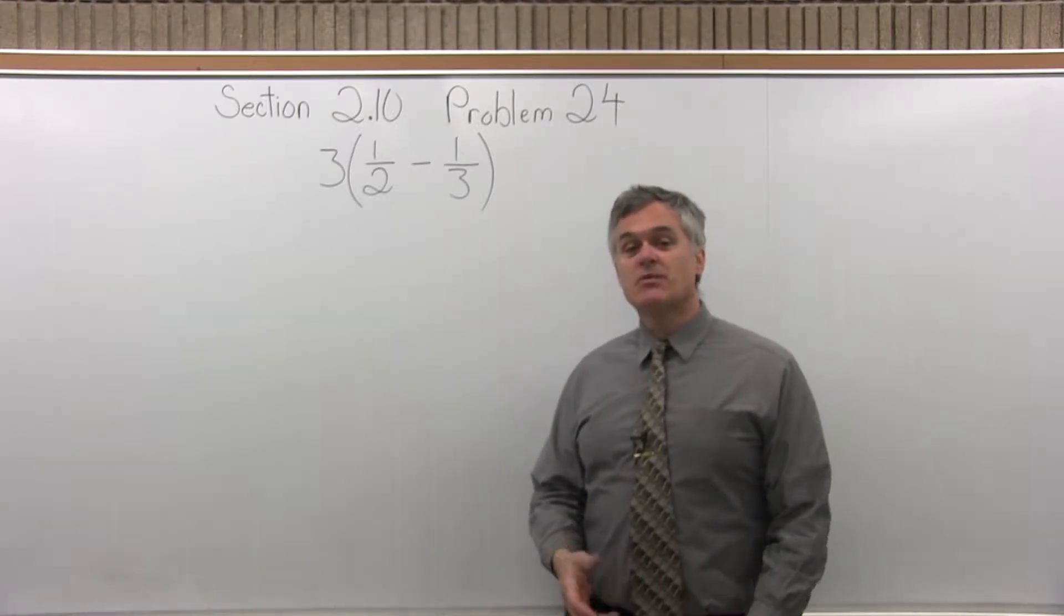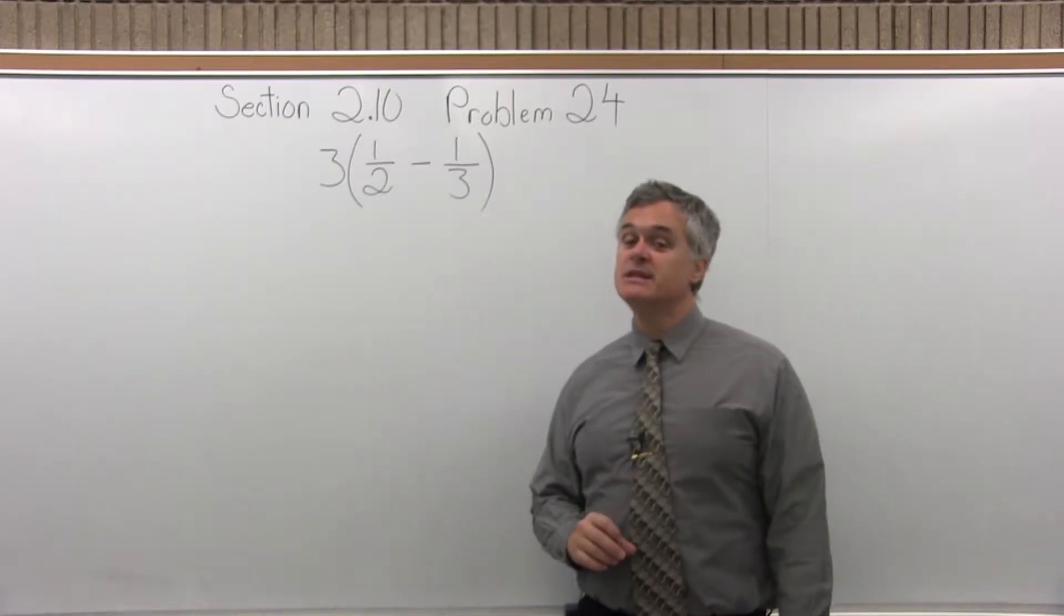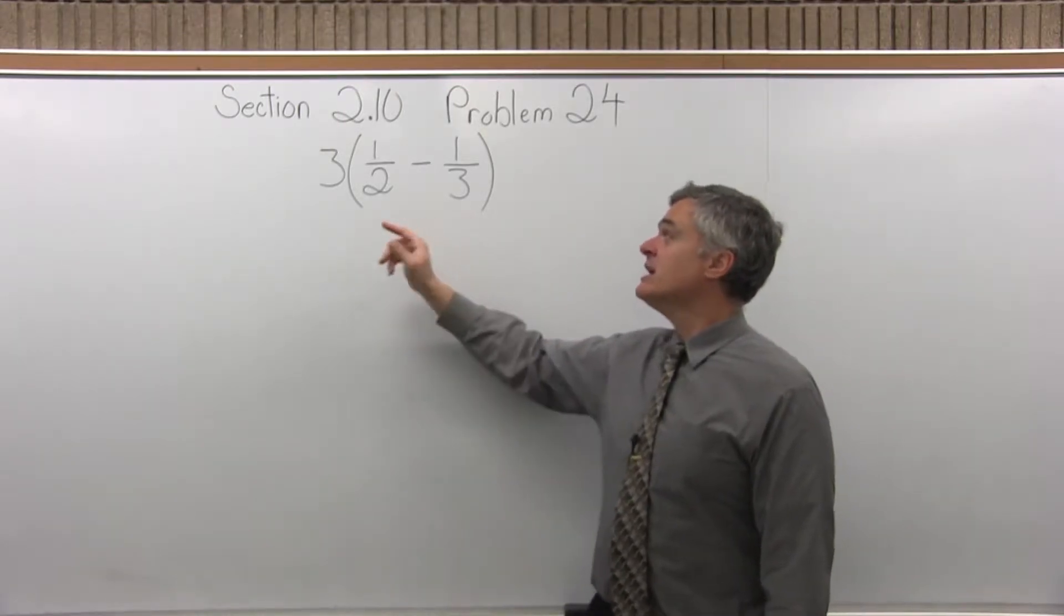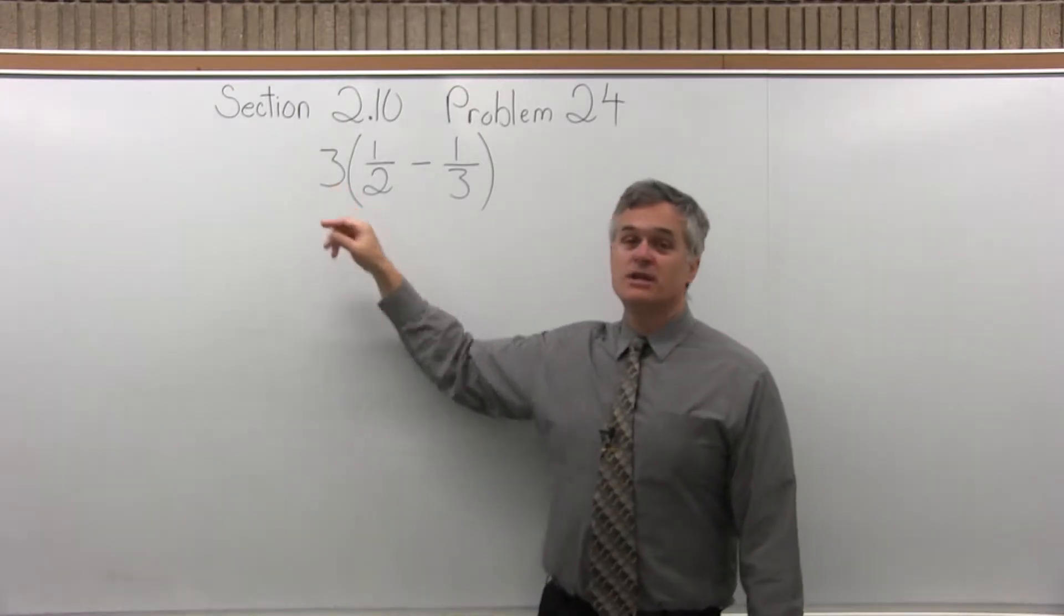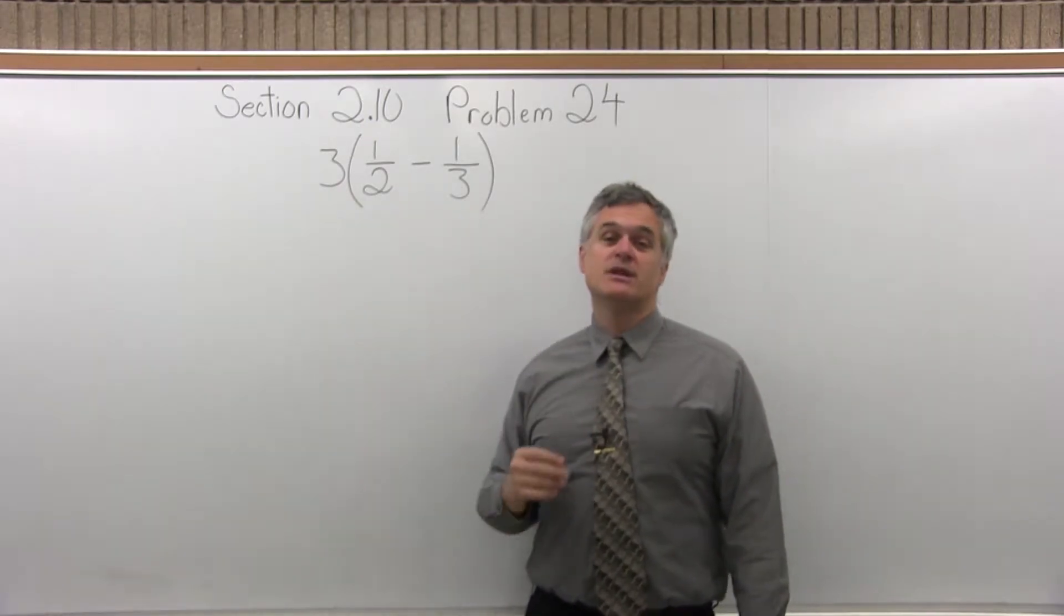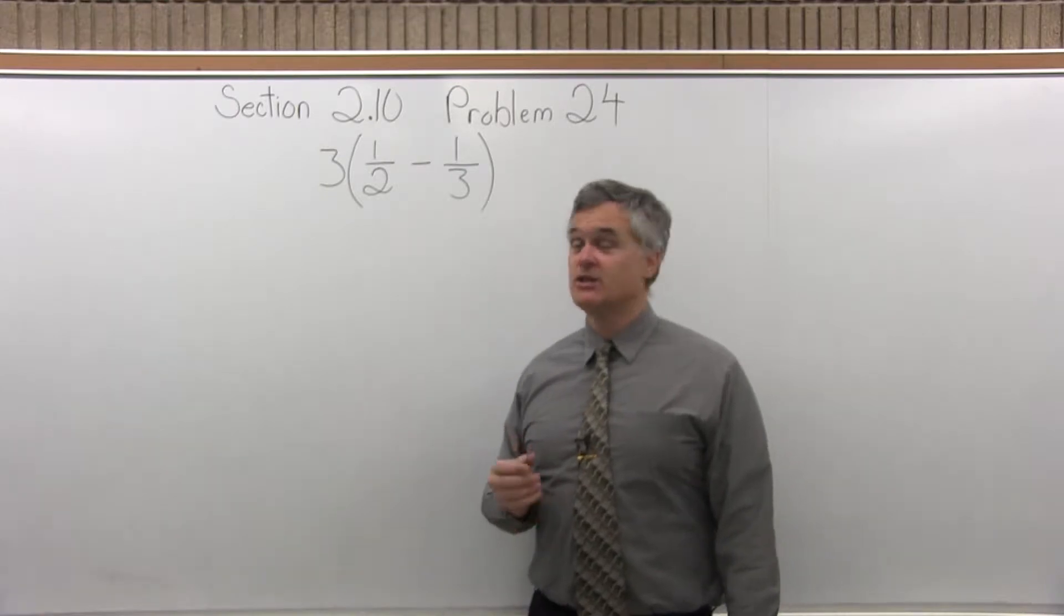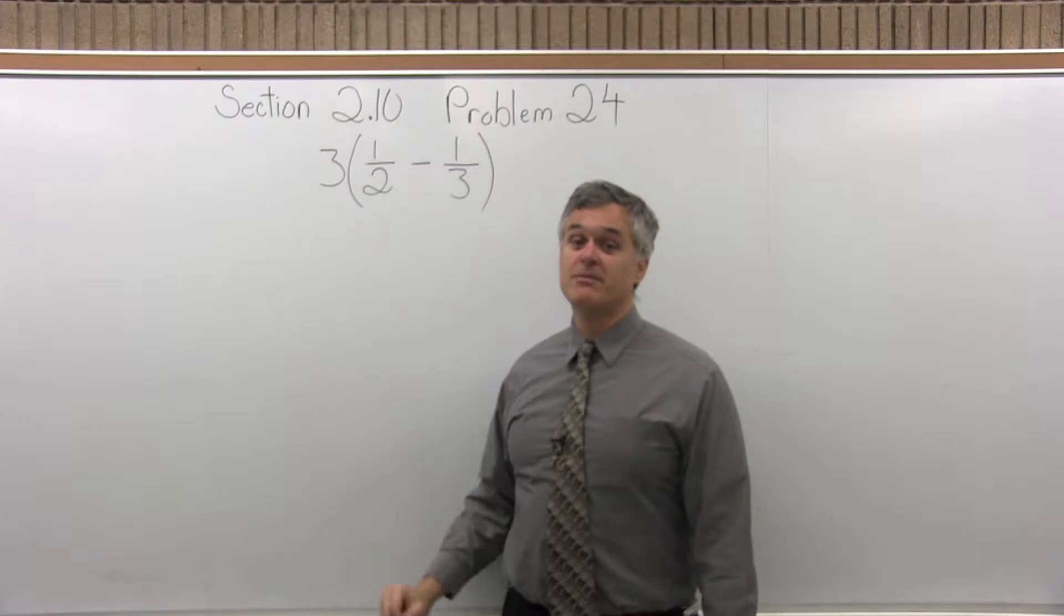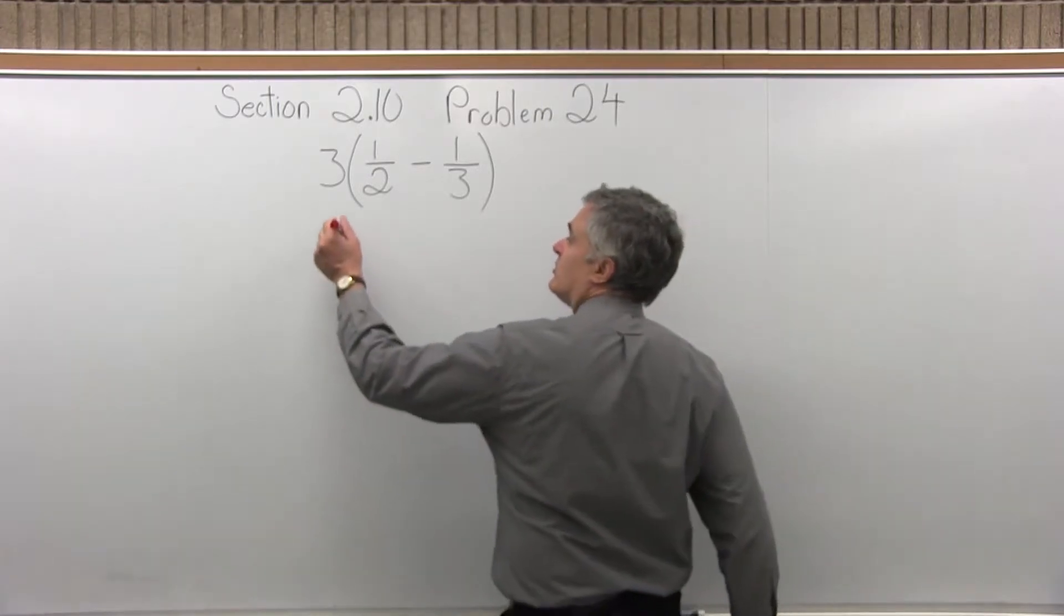So any type of math problem that has parentheses, the parentheses need to be done first. So let me deal with the one-half minus one-third first, and the other thing I'll point out is when there's no operation clearly indicated, like the three next to the parentheses, what's implied is multiplication. So even though they don't write three times the parentheses, that's really what they mean. So let me start by doing this.